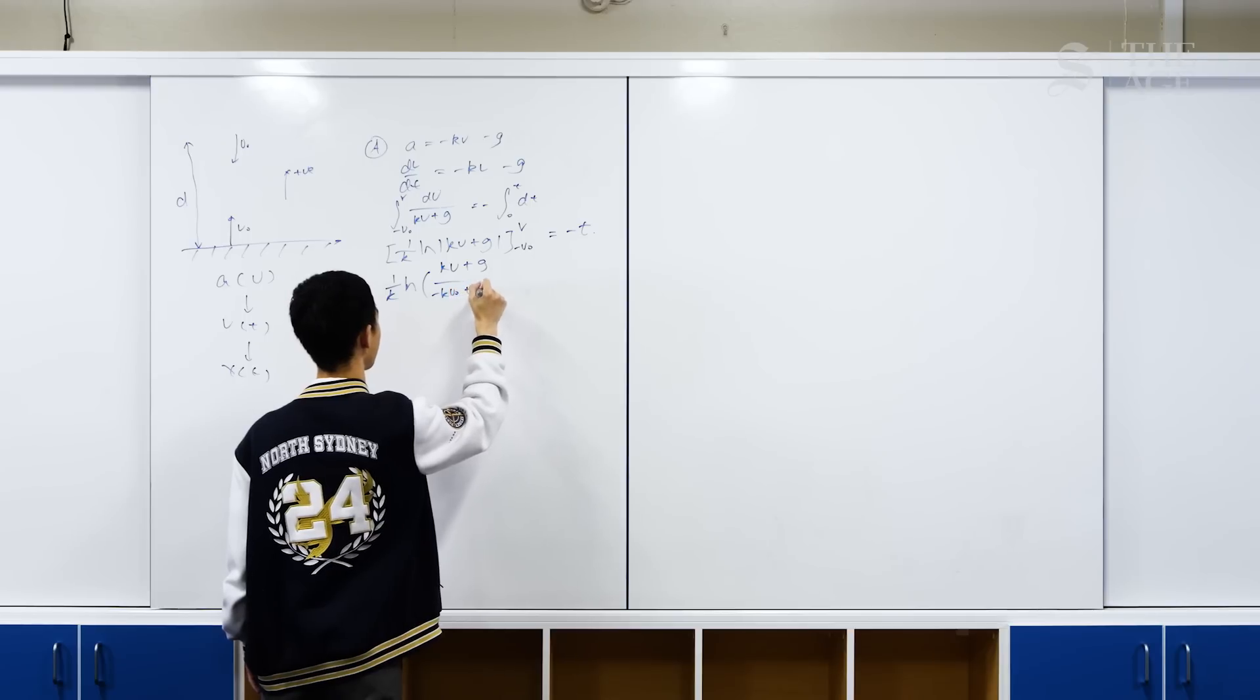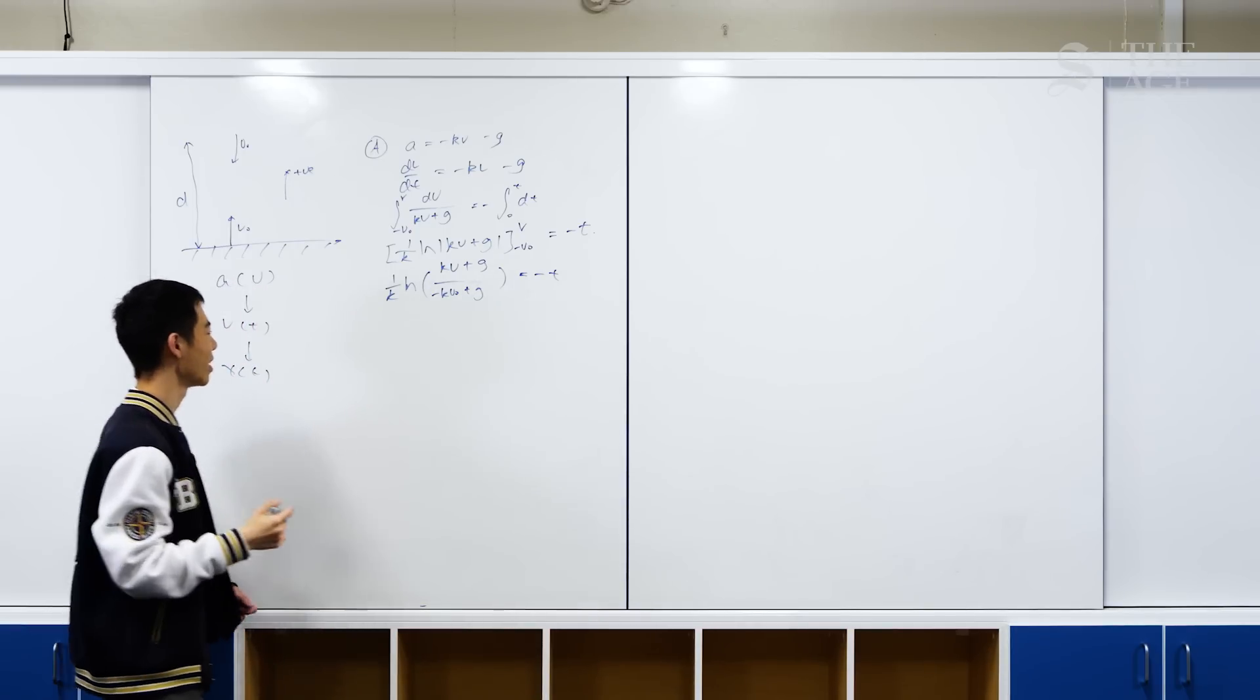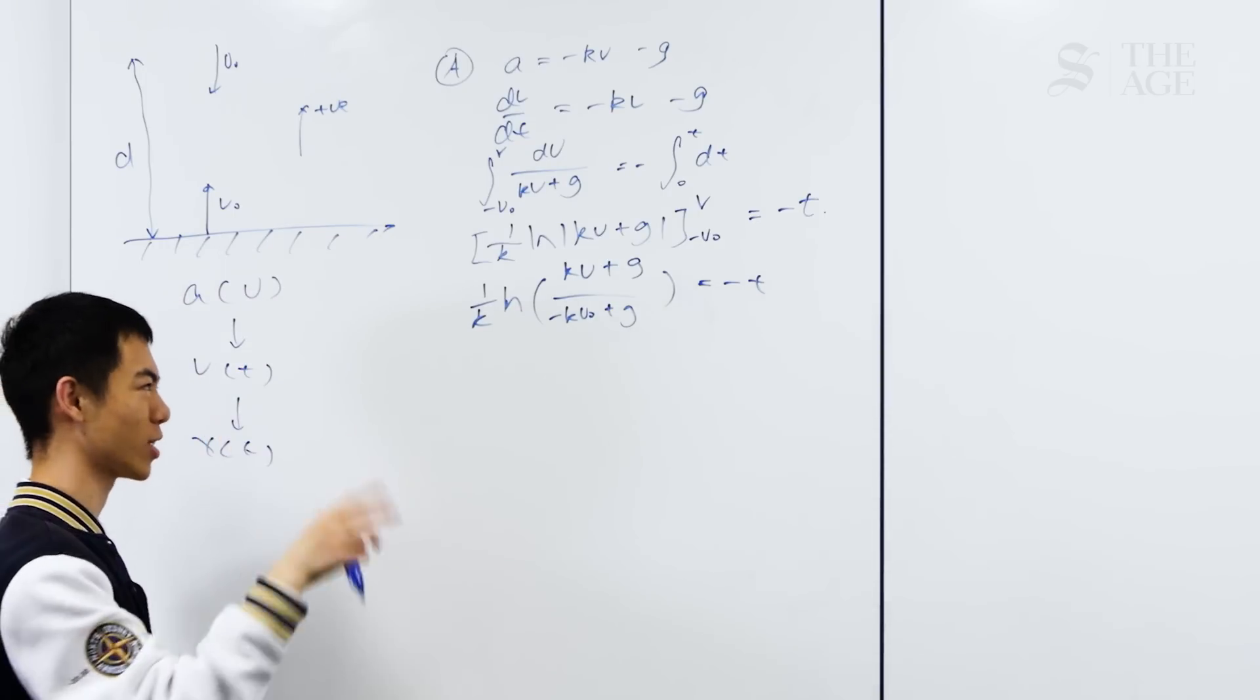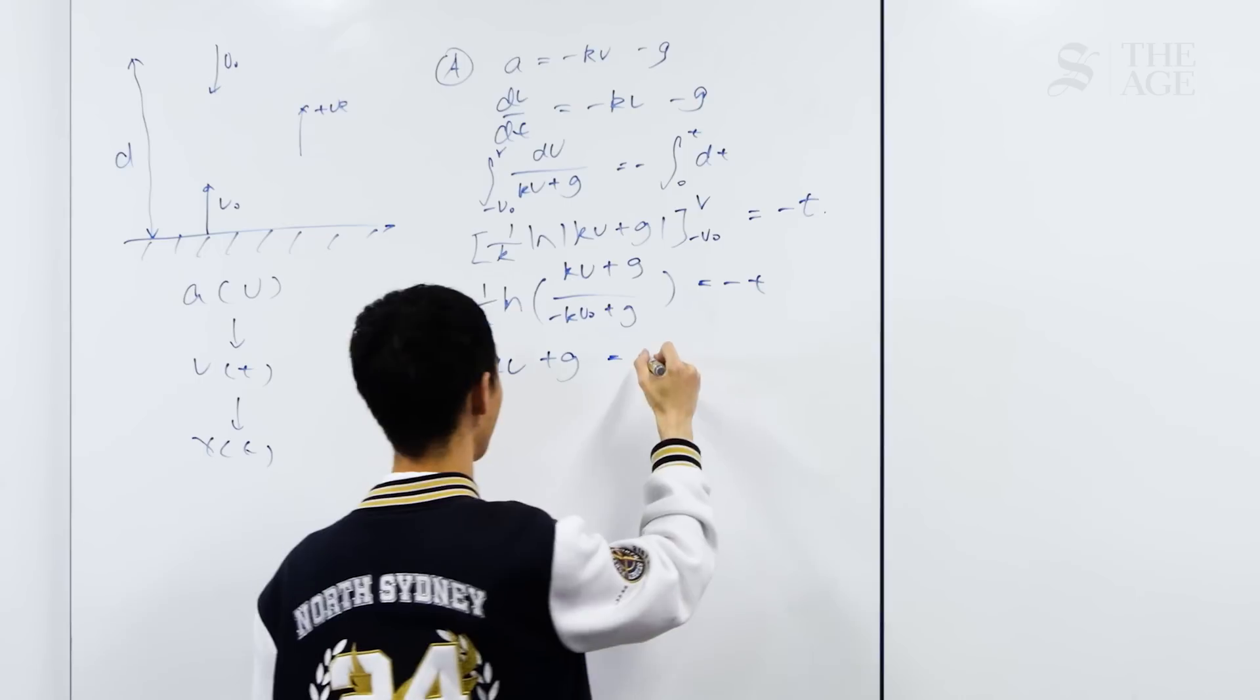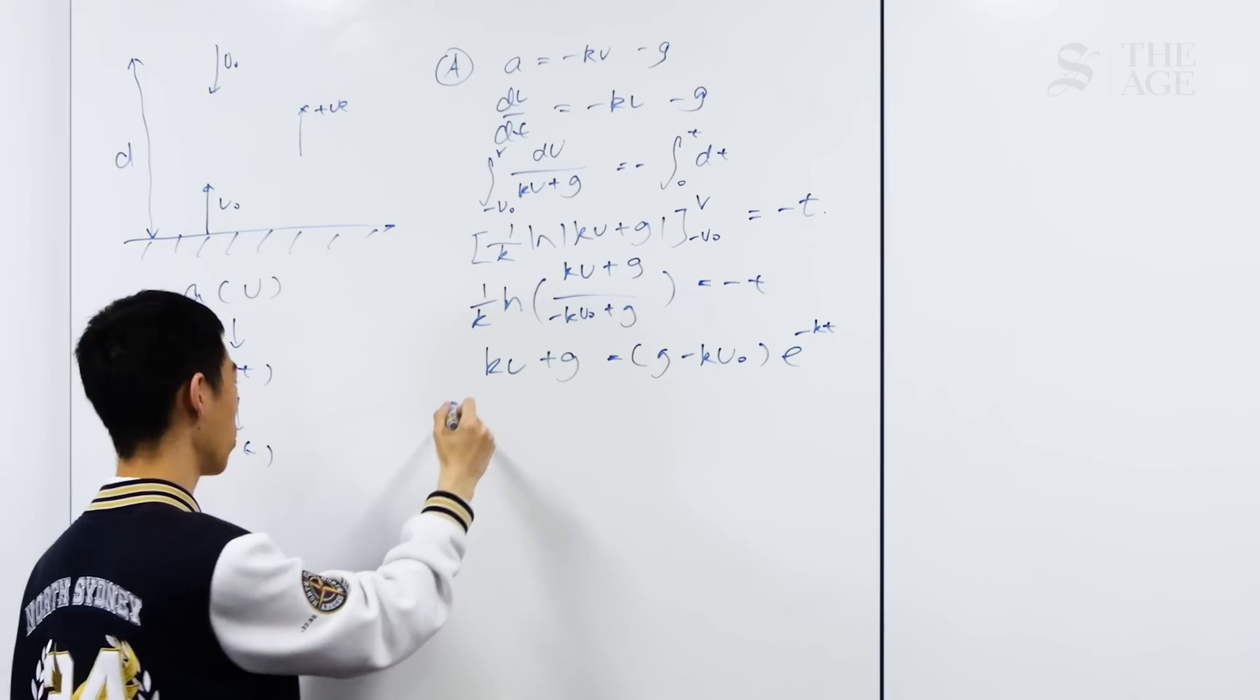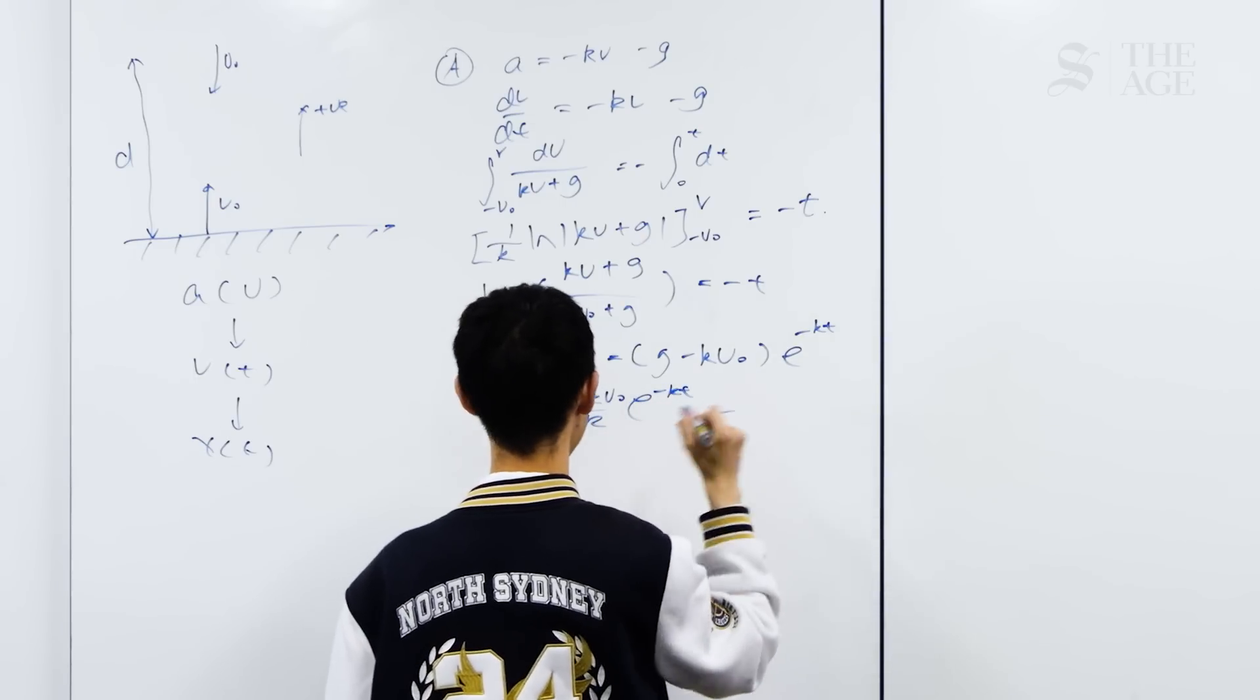As you can see, the algebra is already expanding. It's really important not to get lost in the algebra and forget what our overall flow is. Here we have a lot of variables, but we know what we want is v and t. All we really care about is isolating v as a function of t. The next step is kv + g equals (g - kv0)e^(-kt). We're almost there. We almost have v isolated. So v equals [(g - kv0)/k]e^(-kt) - g/k.